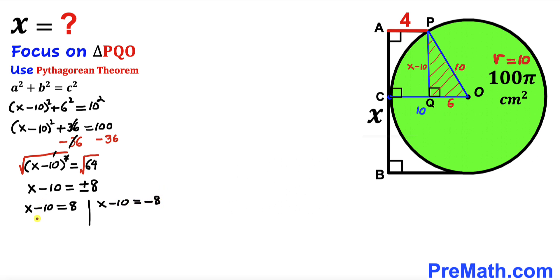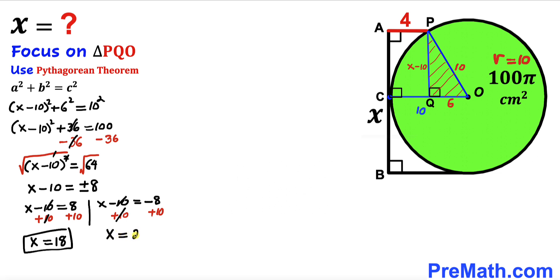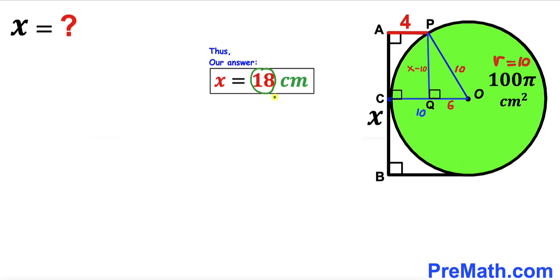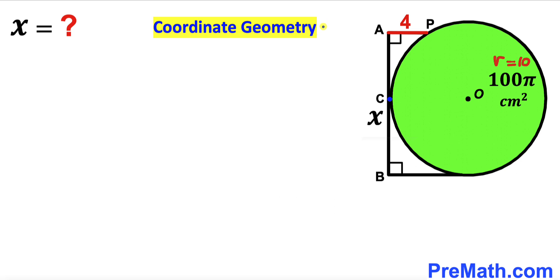Adding 10 to both sides of each equation: the first gives x = 18, and the second gives x = 2 centimeters. Since x = 2 is not feasible geometrically, we reject it and accept x = 18. Thus our x value is 18 centimeters using the first method.